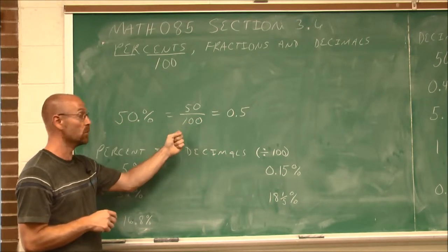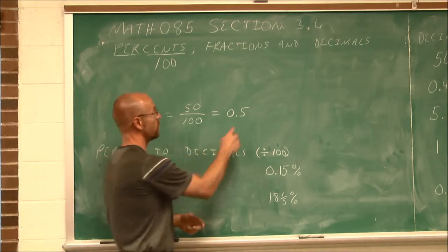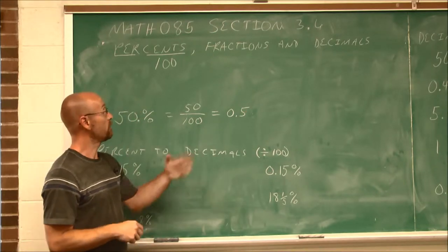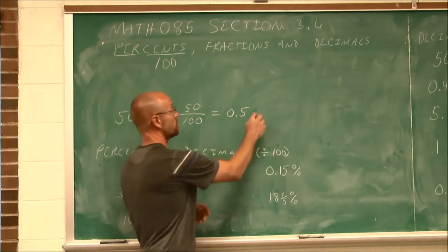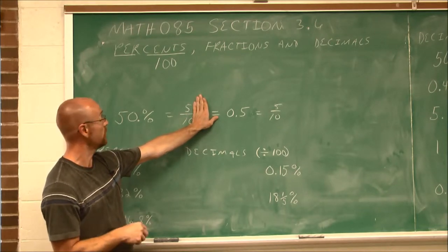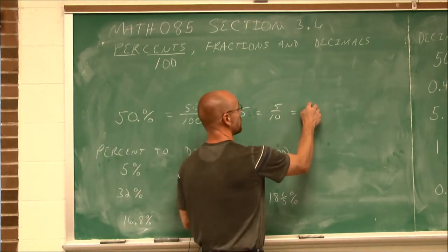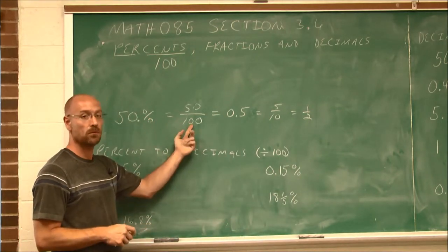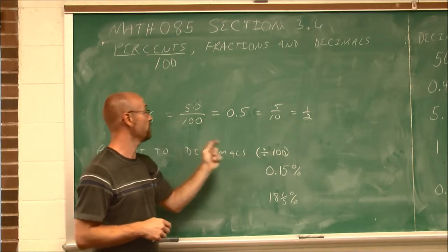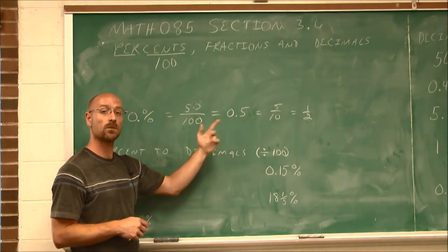When we divide by a factor of 10, we move the decimal to the left. So moving two spots gives us 0.50, which is 0.5. If we want to go further to a fraction, 0.5 is the same as 5 tenths, which reduces to 1 half. So to convert a percent to either a fraction or a decimal, we divide by 100.